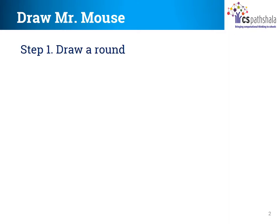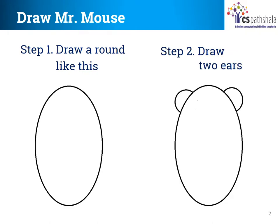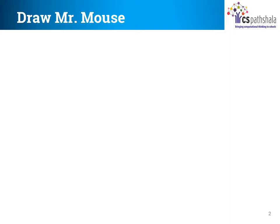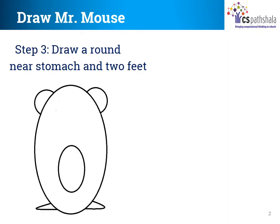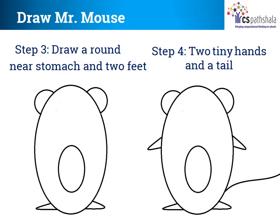Step 1: Draw a round like this. Step 2: Draw two ears — do the round. Draw a round near the stomach and two feet. This round is similar to the round that we drew before, and the two feet are quite easy. Step 4: Draw two tiny hands and a tail. As you can see, the hands are quite small for our small Mr. Mouse, and the tail is long.